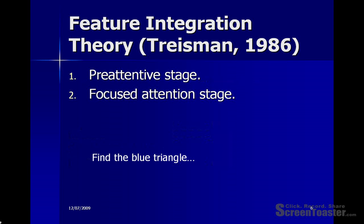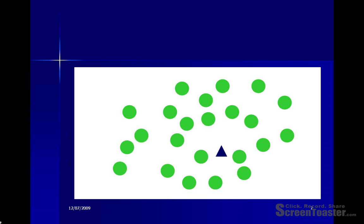Let's have a look at one piece of evidence for this theory. We're going to see a bunch of coloured shapes on the screen and the task is to find the blue triangle. I'm guessing that it didn't take you very long at all to find the blue triangle. According to Feature Integration Theory, the identification of the blue triangle takes place at the pre-attentive stage, because the blue triangle does not share any features with the other items on the screen — the distractors, which are green circles.